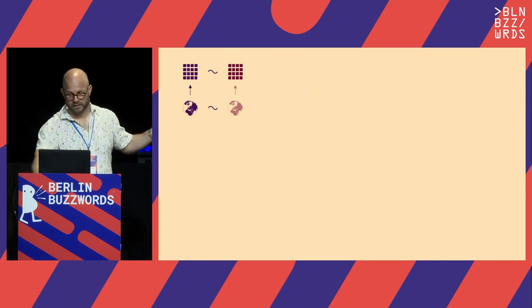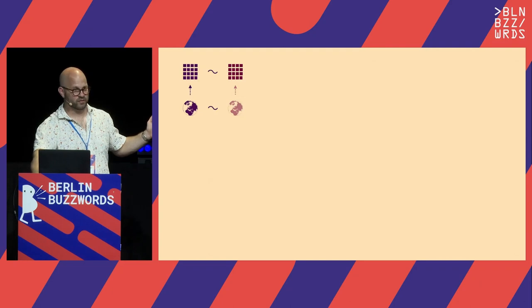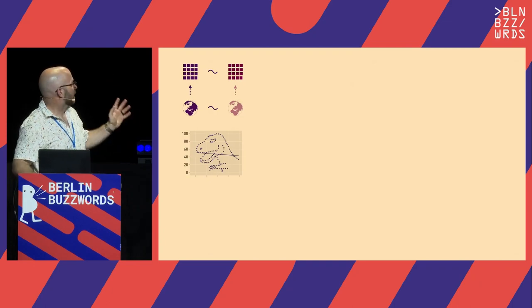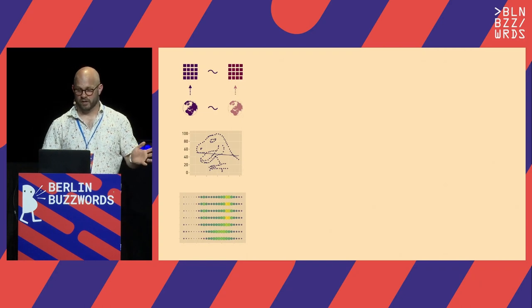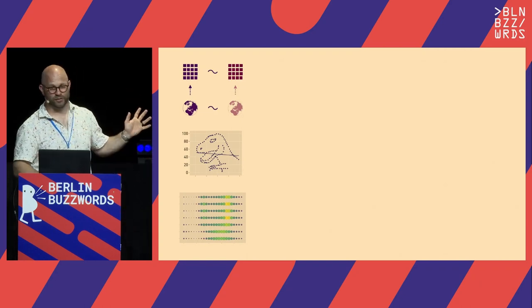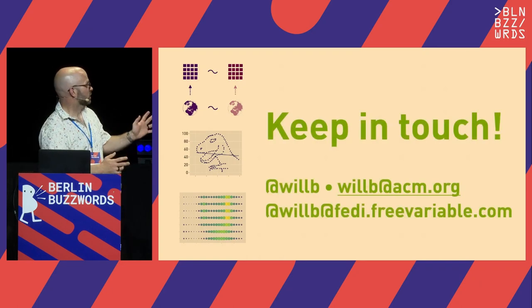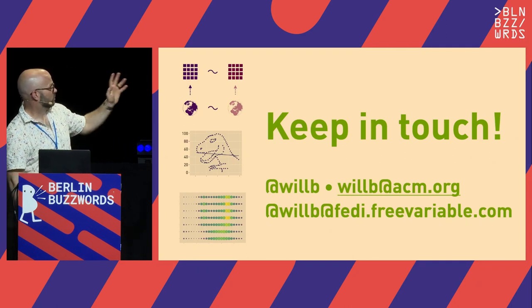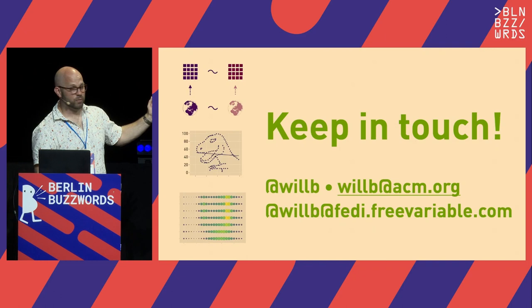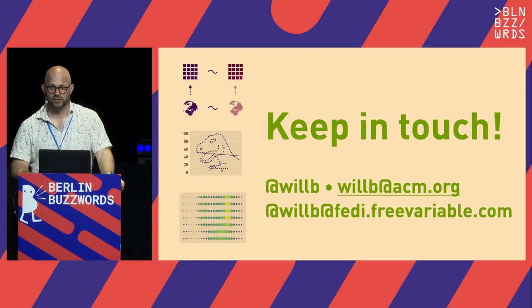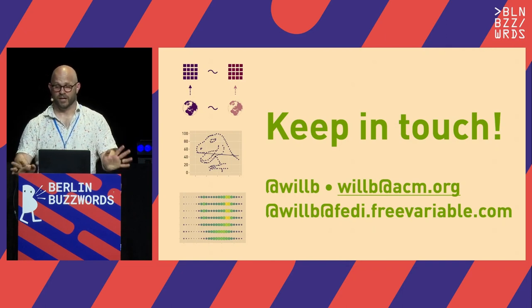We talked about how synthetic data reflects the world, and how by generating it we can reflect a world that is like but not exactly like our world. We talked about things to look out for when characterizing datasets, and how we can use domain knowledge to make a better approximation of the world in synthetic data. I'd love to hear about what you're doing in this space — please keep in touch. I'm at Will B on Twitter and GitHub, and I'm also on Mastodon. It's great to be at Buzzwords.